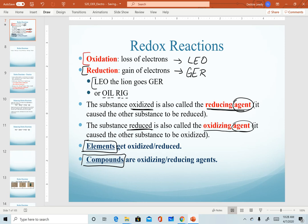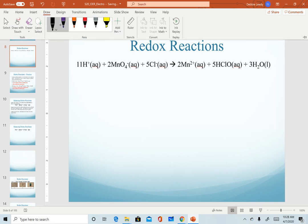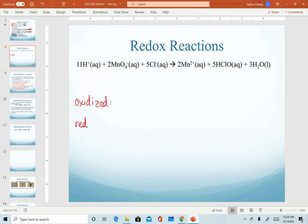We're going to work through an example. Recognize in order to identify what is oxidized, what is reduced, what is our oxidizing agent, and what is our reducing agent, before we can assign these, we have to identify oxidation numbers. We're going to go through this equation and solve.